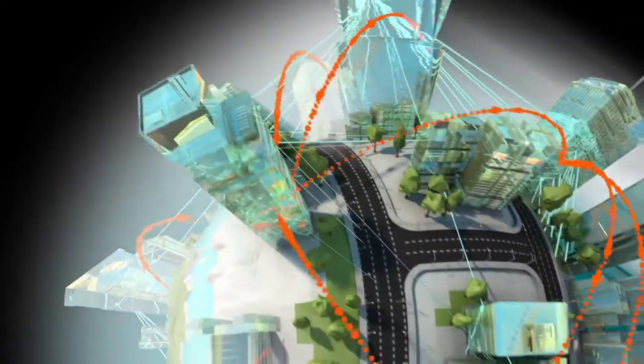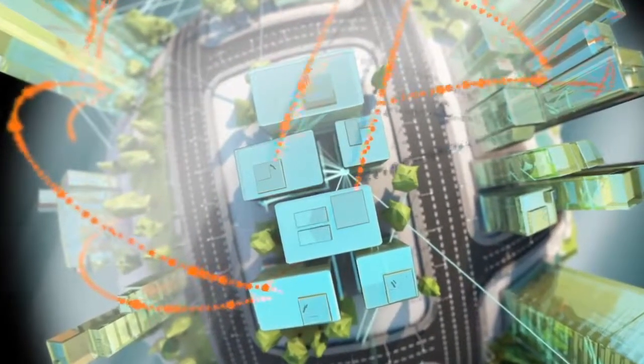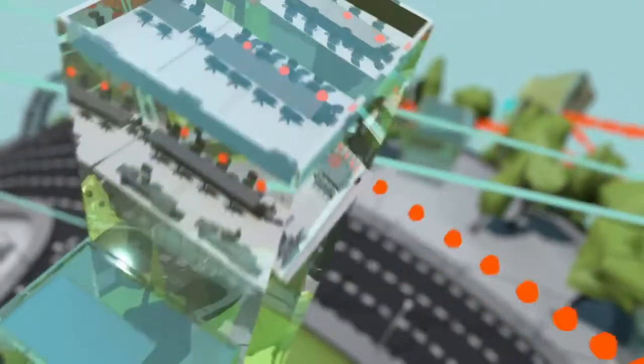Threats can go undetected on your network for months at a time, mapping your environment until they are ready to steal your valuable assets. But how do you defend against threats you can't see?